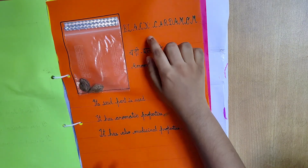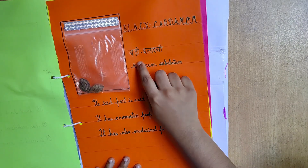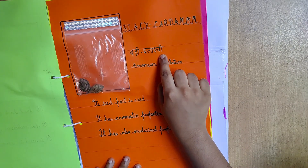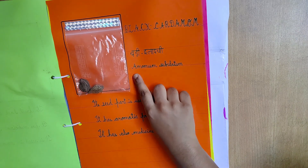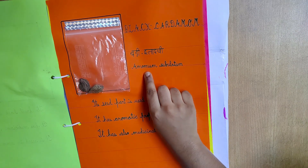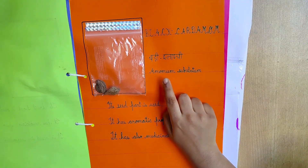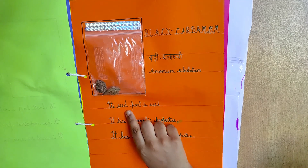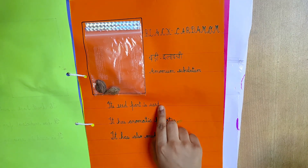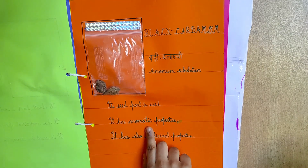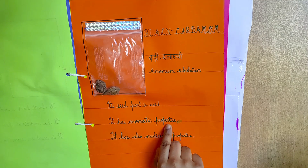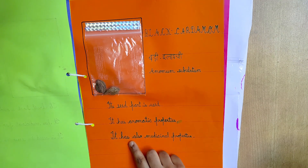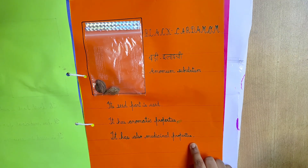This is black cardamom. It is also known as badi ilaichi in Hindi language. Its scientific name is Amomum subulatum. Its seed part is used. It has aromatic and medicinal properties.